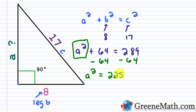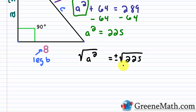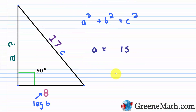To solve for A, we subtract 64 from each side, giving A squared equals 225. Taking the square root of each side, we get A equals plus or minus 15. Since A is a length and distance can't be negative, we discard the negative solution. So A equals 15. Our right triangle has leg B of 8, leg A of 15, and hypotenuse C of 17.